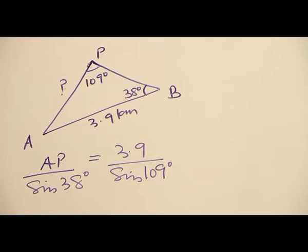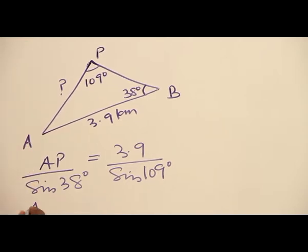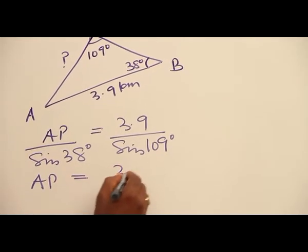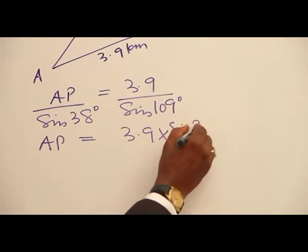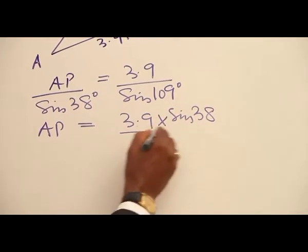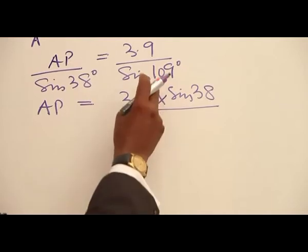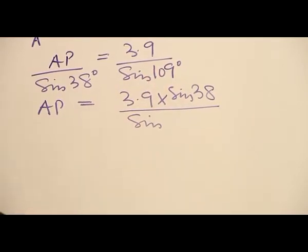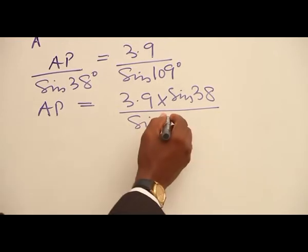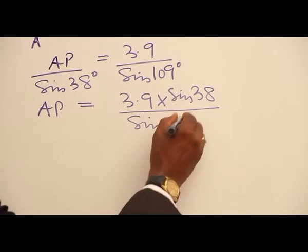we are able to bring out the refined diagram, which makes it clearer and simpler for us to solve. So at this junction, you find your AP to be equal to 3.9 times sine 38 degrees all over sine - the acute equivalent of 109 degrees is subtracting that from 180, and that will give you 71 degrees.